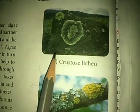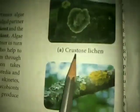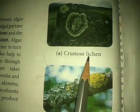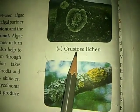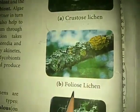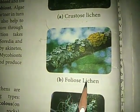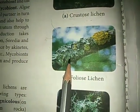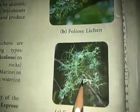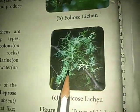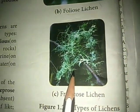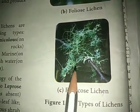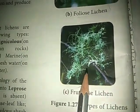Reviewing the morphology of the thallus: crustose lichen has a crust-like thallus; foliose lichen has a leaf-like thallus; and fruticose lichen has a branched, pendular shrub-like structure.